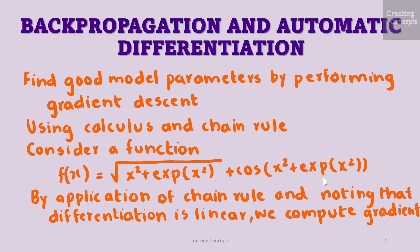Now we will look into backpropagation and automatic differentiation. In many machine learning applications, we find good model parameters by performing gradient descent, which relies on the fact that we can compute the gradient of our learning objective with respect to the parameters of the model. For a given objective function, we can obtain the gradient with respect to the model parameters using calculus and applying the chain rule. We already saw this when we solved the gradient of a squared loss with respect to the parameters of a linear regression model.